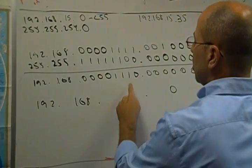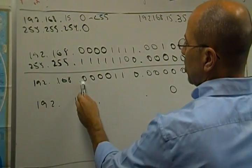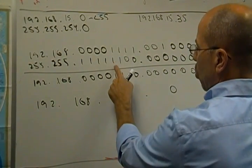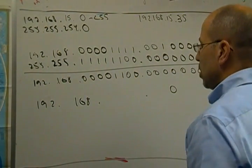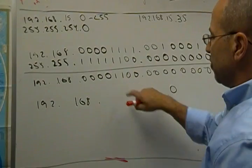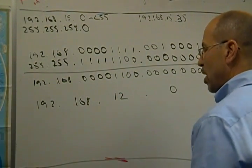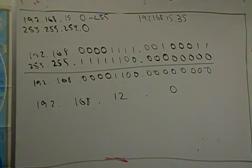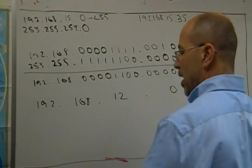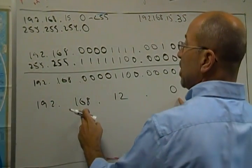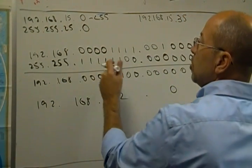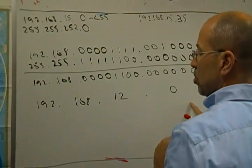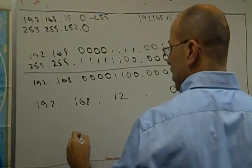But what happens here now? 0, 0, 0, 0, 0, 1, 1, and we've got another zero here. So that makes this 8 plus 4, 12.0. So what I'm telling you is that now the range of addresses that match because of my new subnet mask, which is, oh, by the way, 252, looks like this.